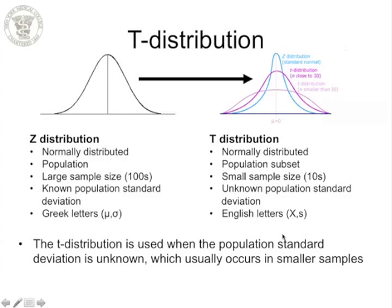The Z-distribution is normally distributed in a Gaussian bell-shaped curve, associated with large population sample sizes where the standard deviation is known; we use Greek letters mu and sigma. The T-distribution is also normally distributed but represents a population subset — small sample sizes where population standard deviation is often unknown, described using English letters like x-bar and s. The T-distribution resembles a Z-distribution but is flattened, implying more uncertainty. With very small sample sizes (less than 30), the distribution is much wider.